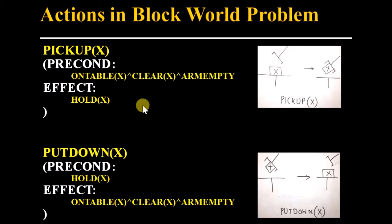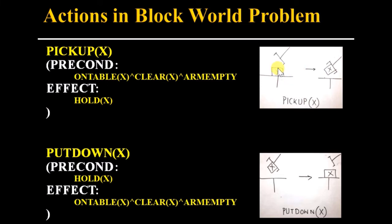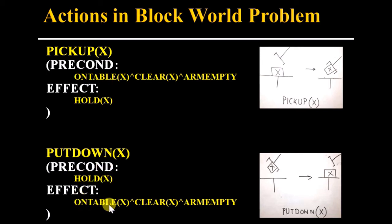The action schema represents an action by its name, precondition, and effect. For Pick-up(x): the precondition is that the block must be on the table, it must be clear, and the robot arm is empty. The effect is that the robot arm holds x, so Holding(x). For Put-down(x): the precondition is Holding(x); the effects are On-table(x), Clear(x), and Arm-empty — the block is on the table, nothing is above it, and the robot arm is empty.